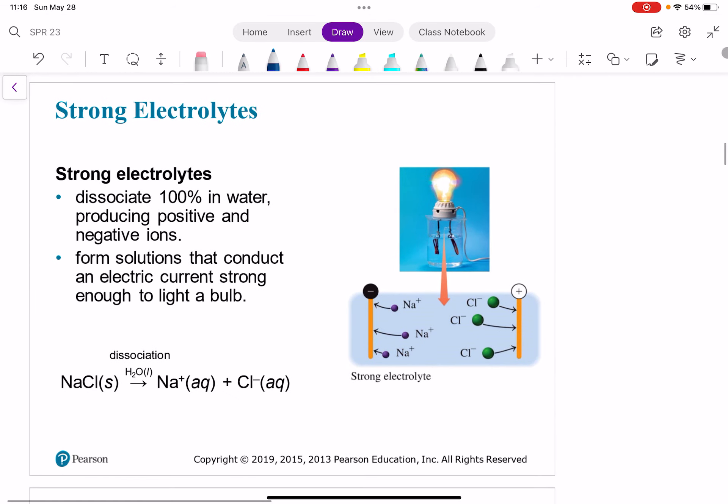So we categorize electrolytes into two categories, so they're either strong or weak. So what is a strong electrolyte? When we say strong electrolyte, we mean that the electrolyte dissociates 100% in water, producing the positive and negative ions.